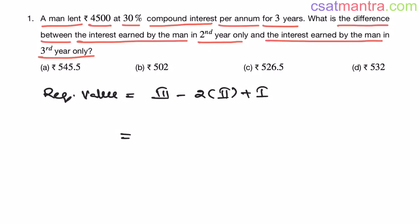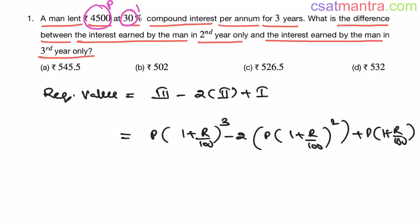Now, amount after 3 years will be P into 1 plus R by 100 power 3 minus 2. Amount after 2 years, that is P into 1 plus R by 100 whole square plus amount after 1 year. So, this is P into 1 plus R by 100. Let us not substitute the value of P and R here because there is so much to simplify. I am taking P into 1 plus R by 100 common.